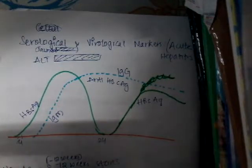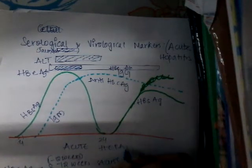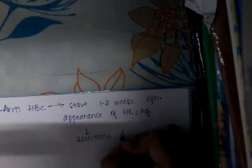In clinical disease, you will first have HBeAg and later you will have anti-HBe antibody. These are the major things seen in acute hepatitis. Anti-HBc antibody starts 1 to 2 weeks after the appearance of HBsAg and is detectable for weeks to months.